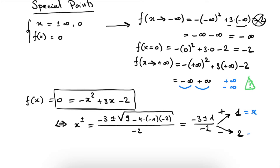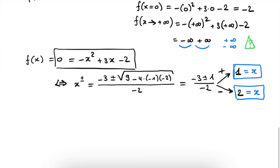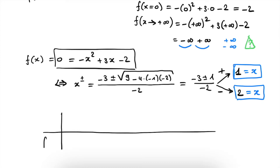So we have two solutions: x is equal to 1 and x is equal to 2. At these two specific points, our function value will be zero — so we will change sign. At this point, we already did the heavy lifting. What we now need to do is translate our results into a tabular form where we look at the function value f of x for our specific x values that we found.